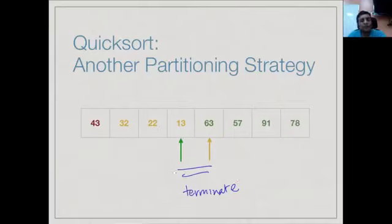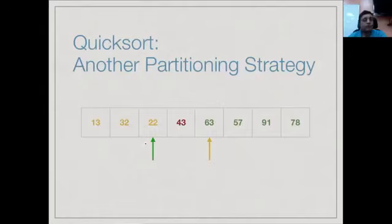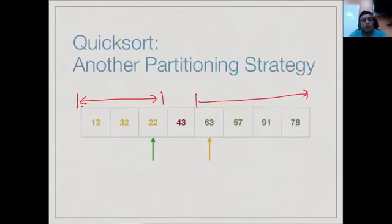Once we have terminated, we again need to move the pivot to the center. When the algorithm terminates, the right marker points to the end of the lower limit. So we exchange the pivot 43 with the element 13 at that position, placing 43 in its correct position. We then have a pointer to the last lower element and a pointer to the first upper element, and we apply Quicksort recursively to both parts.